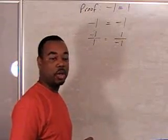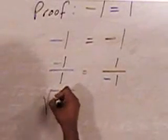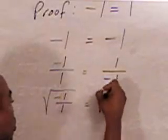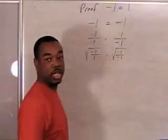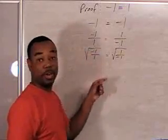Next, I'm going to take the square root of both sides. Next, I'm going to take the square root of just the numerator and the denominator.